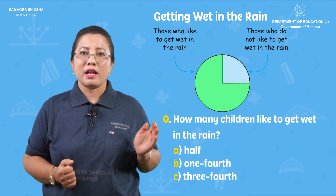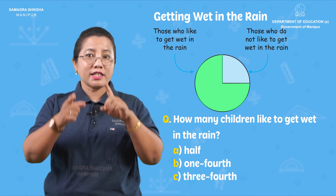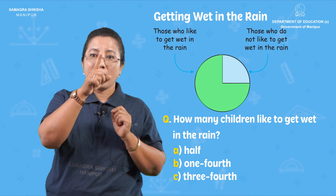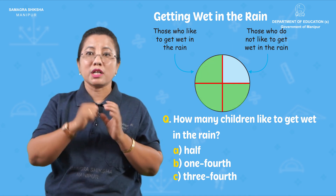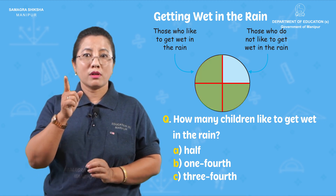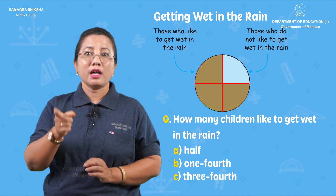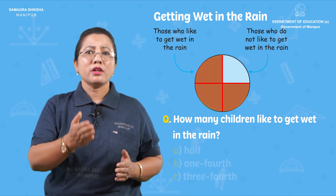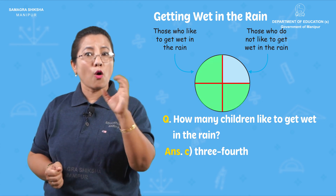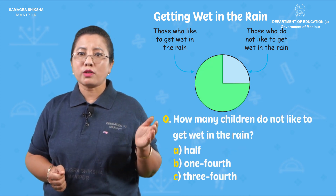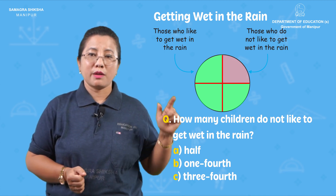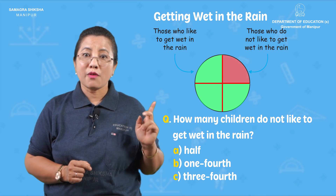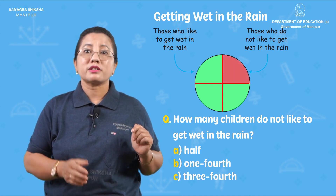How many children like to get wet in the rain, and how many do not? What fraction of the children like to get wet — is it half, one-fourth, or three-fourths? Yes, that's right — one-fourth!